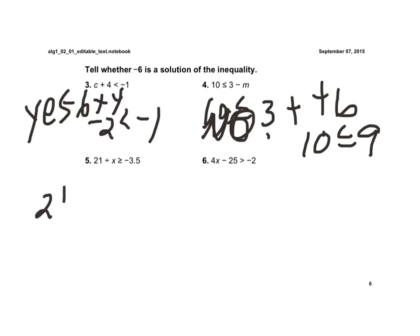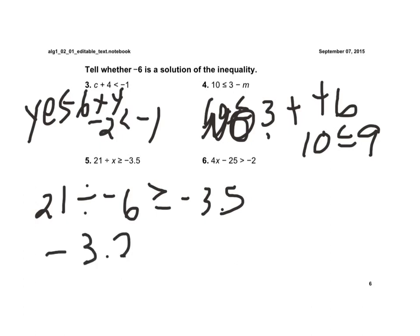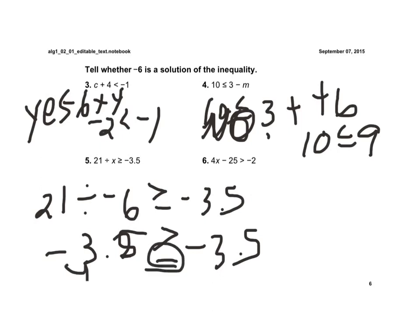Here we'd have 21 divided by negative 6 is greater than or equal to negative 3.5. Well, 21 divided by negative 6 is negative 3.5, and negative 3.5 is greater than or equal to negative 3.5 — again, the equal to part applies here. So yes, that is a solution.